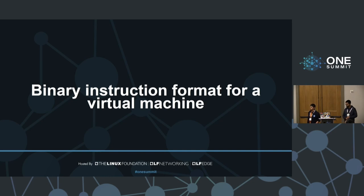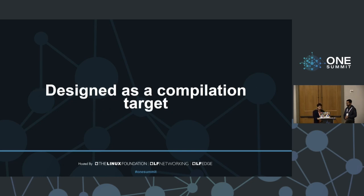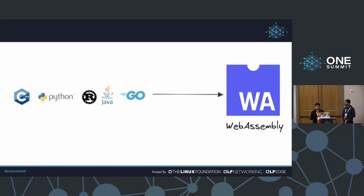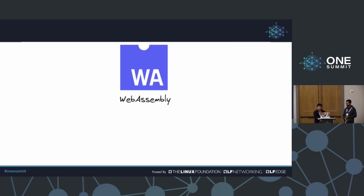WebAssembly is a binary instruction format for a stack-based virtual machine. It's designed as a compilation target — you can have code written in C++, Python, Java, Rust, or whatever you like, compiled down to WebAssembly, and then you run the WebAssembly rather than the original source code. Why would you want this compilation target when you could just use a C++ compiler? We'll talk more about that soon.